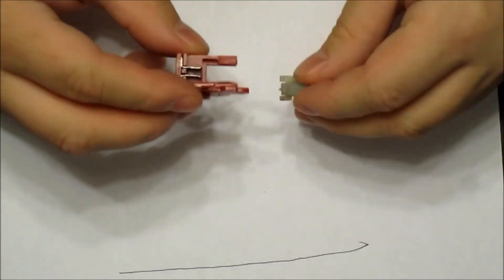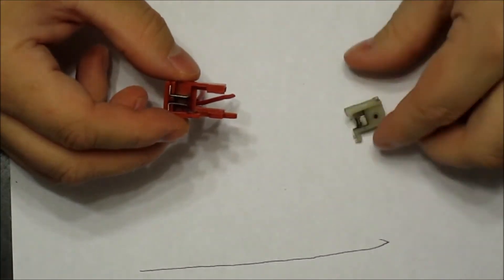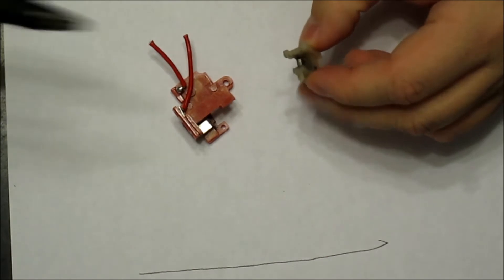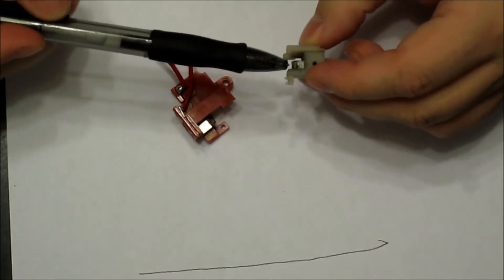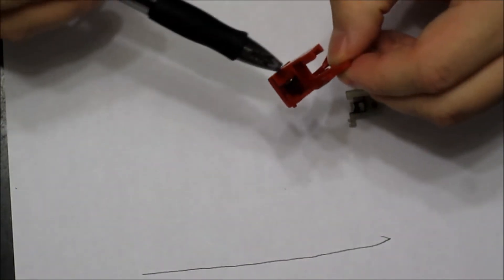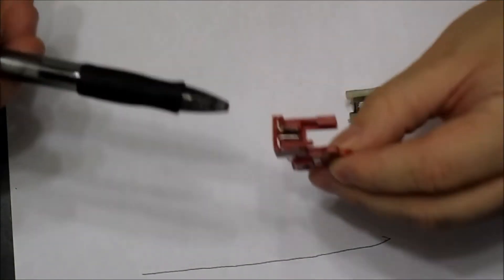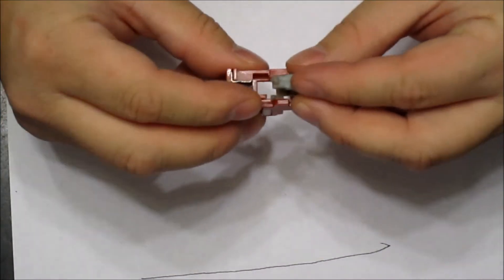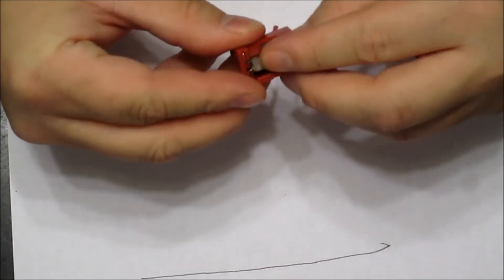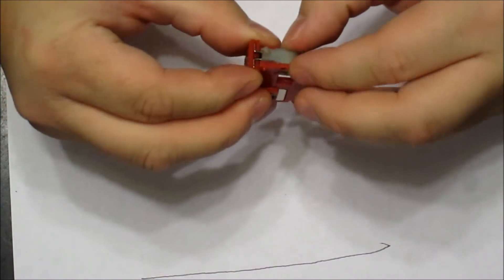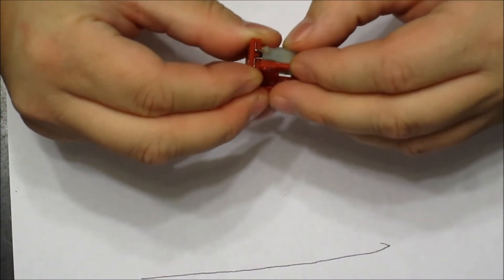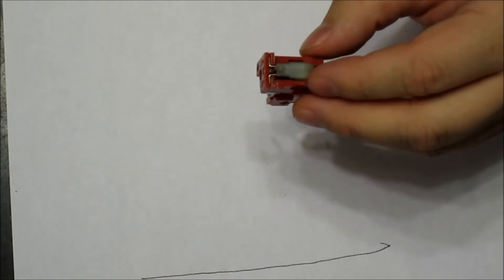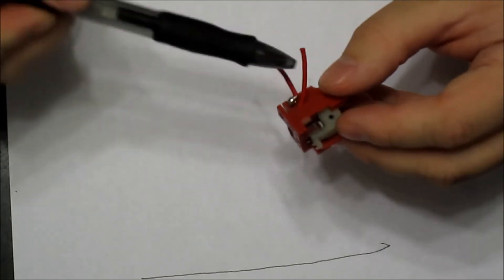So how this works is you have a shuttle with metal contacts. I'll use a pen here to help point. Okay, this is the trigger housing and there's two metal contacts in here. Now when you pull the trigger, it moves the shuttle and it connects to the two contacts in the trigger unit, which sends voltage out of these two wires to your motor, which spins the gears.